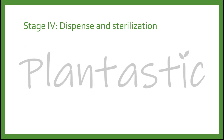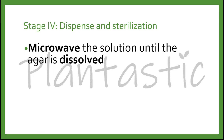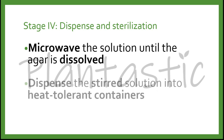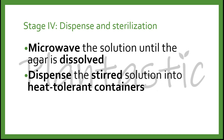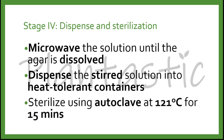The last step: we microwave the solution until the agar is dissolved and boiling. We then dispense the stirred solution into heat-tolerant containers and close them with heat-tolerant lids. After that, we sterilize them using autoclave at 121 degrees Celsius for 15 minutes.